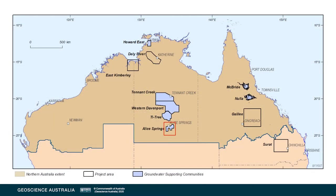During the Exploring for the Future program, in partnership with our state and territory colleagues, many of our regional projects directly helped to support communities secure reliable supplies of water. From understanding the risk of groundwater supplies in Howard East near Darwin, to protecting dry season water supplies in the upper Burdekin in Queensland, to helping remote communities, we've directly helped towns right across Northern Australia. We can take a closer look at one key project in Alice Springs.